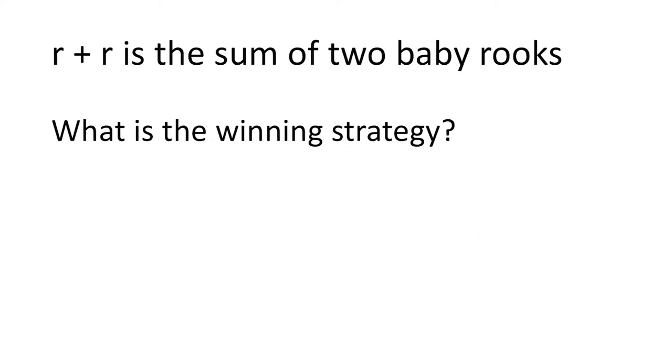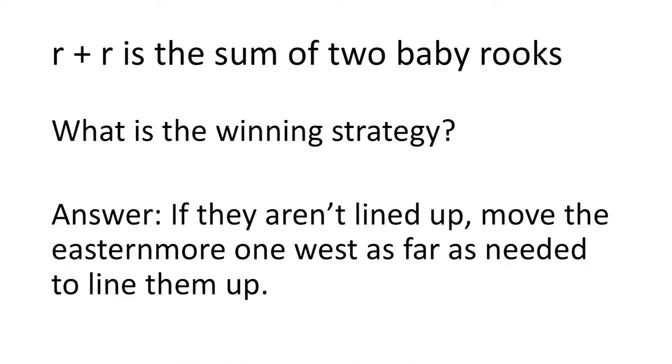The next simplest impartial chess game is the sum of two baby rooks. What is the winning strategy? The answer is to line them up on the same column.